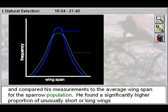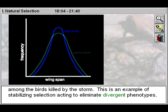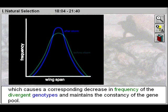He found a significantly higher proportion of unusually short or long wings among the birds killed by the storm. This is an example of stabilizing selection acting to eliminate divergent phenotypes, which causes a corresponding decrease in frequency of the divergent genotypes and maintains the constancy of the gene pool.